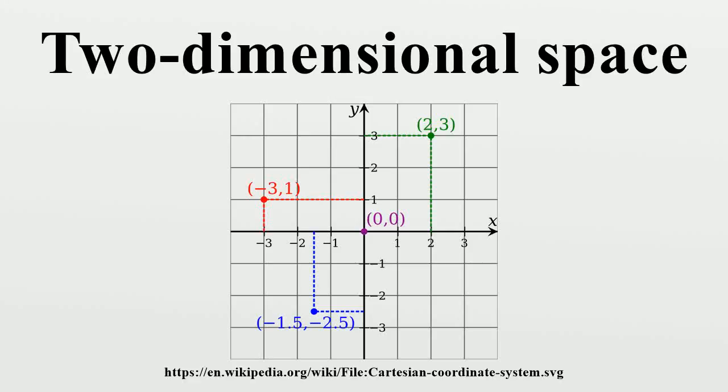In physics and mathematics, two-dimensional space or bi-dimensional space is a geometric model of the planar projection of the physical universe. The two dimensions are commonly called length and width. Both directions lie in the same plane.